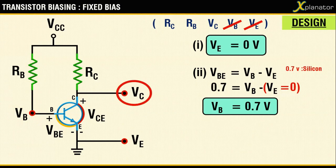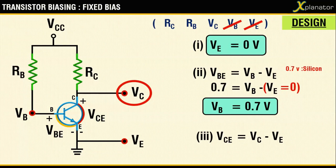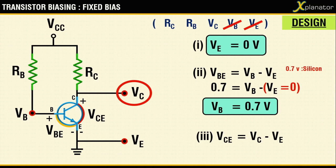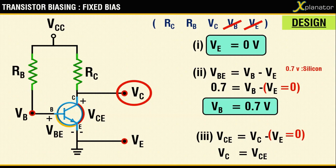The third is the collector voltage VC, which can be written as VCE equals VC minus VE. Again, VE equals 0, hence VC equals VCE. That's the three unknown voltages.